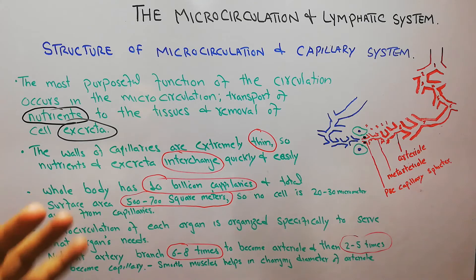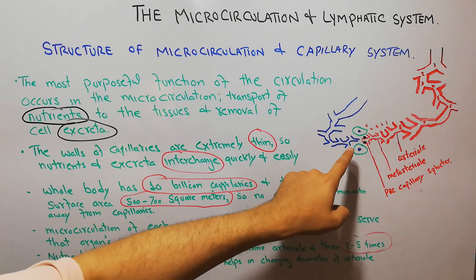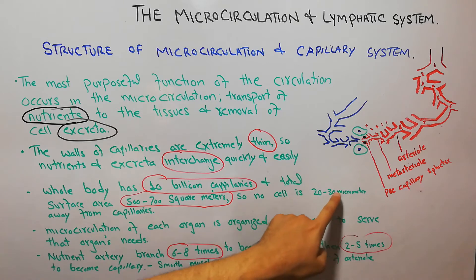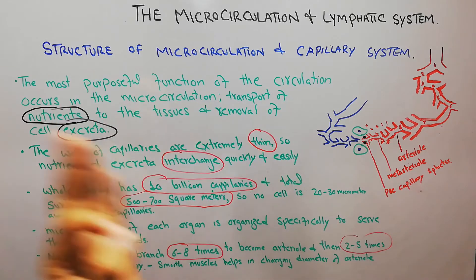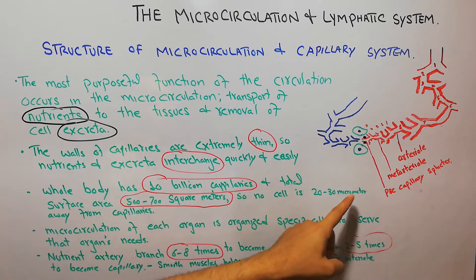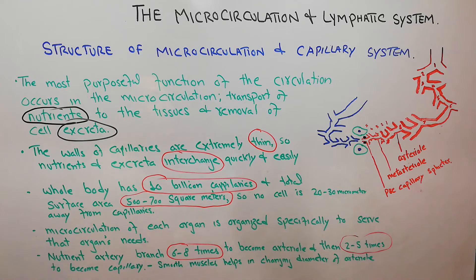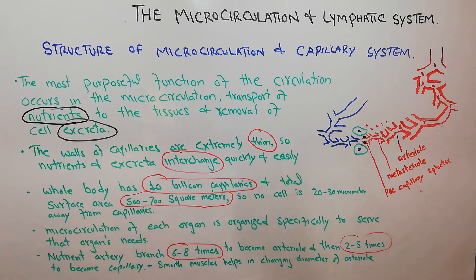For this interchange of nutrients and excreta, it is important that capillaries must reach each and every cell of the human body. That is why there are about 10 billion capillaries in the whole body, with a total surface area of around 500 to 700 square meters — roughly one-sixth of a football ground — so that no cell is more than 20 to 30 micrometers away from a capillary.